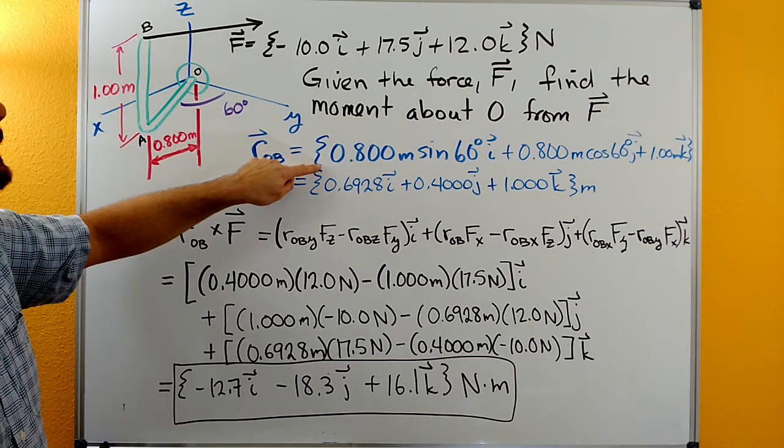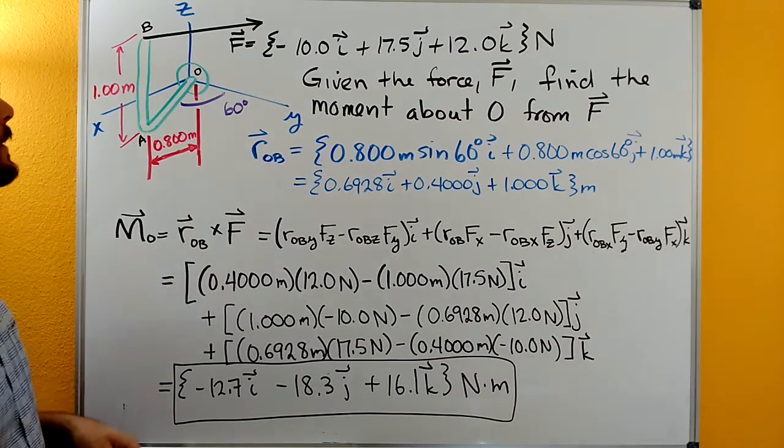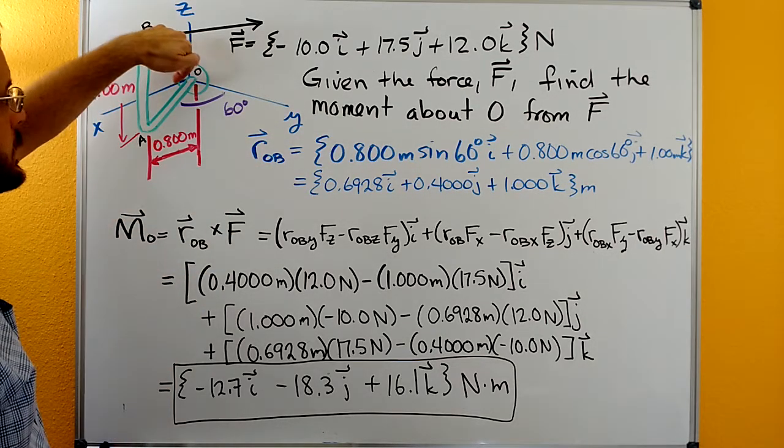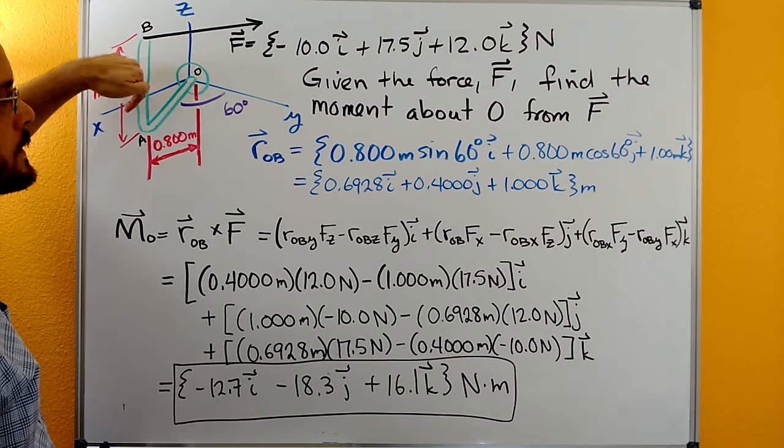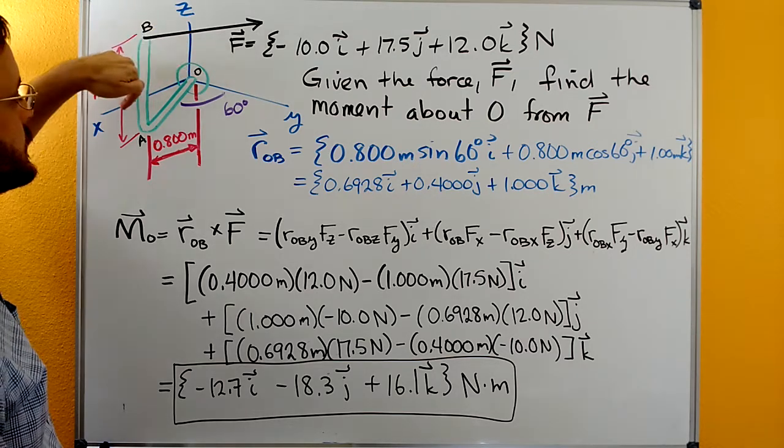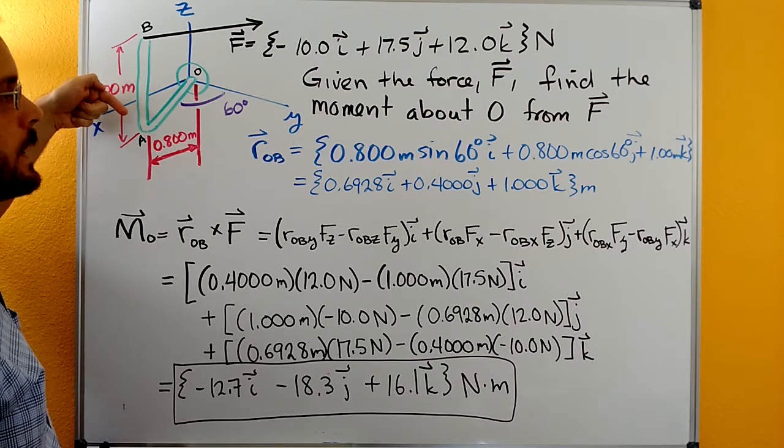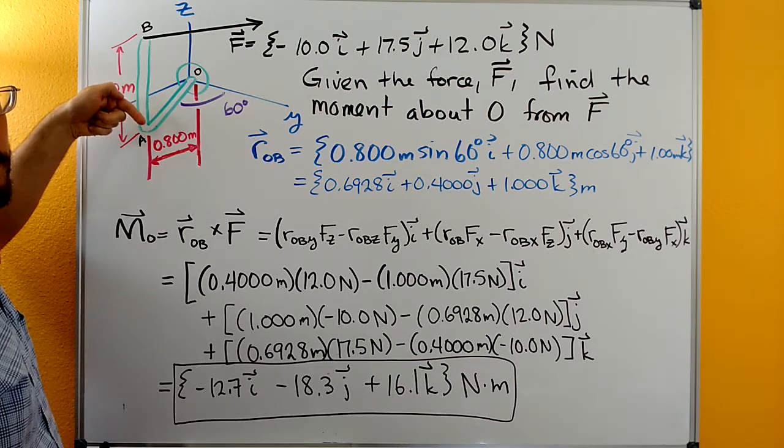So here's our position vector. It's going to be starting at O here going along the x-axis, 0.8 meters sine of 60 degrees in the positive x direction and then 0.8 meters cosine of 60 degrees in the positive y direction